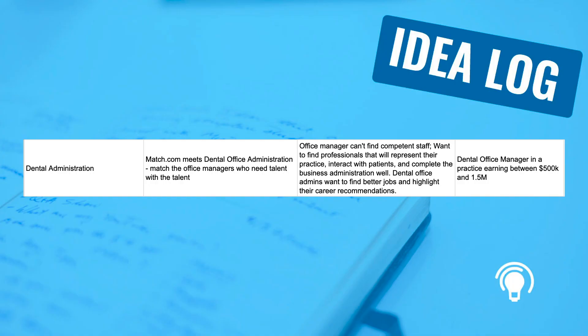After considering these three problems in the dental space, I decided to focus on dental administration. I came up with a concept of an app that's kind of like match.com meets dental office administration — basically, we're trying to match the office managers in these dental practices with the talent that they need. The user persona for this app is the dental office manager in a practice earning between $500,000 and $1.5 million per year. I'm going to go ahead and paste it into my tracker, and we are done.